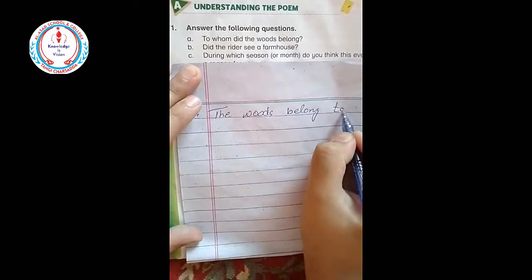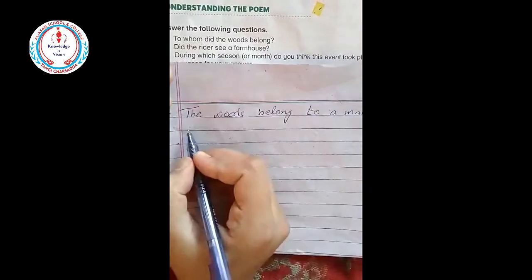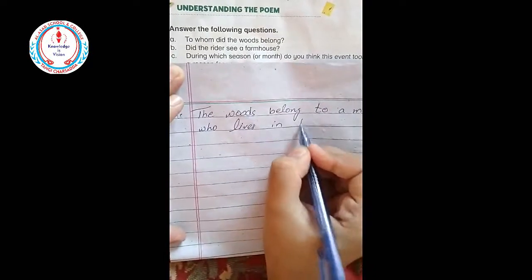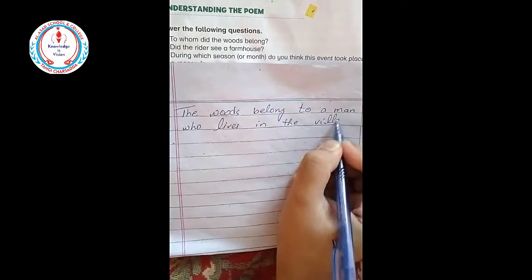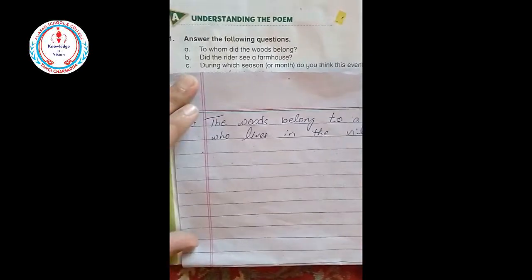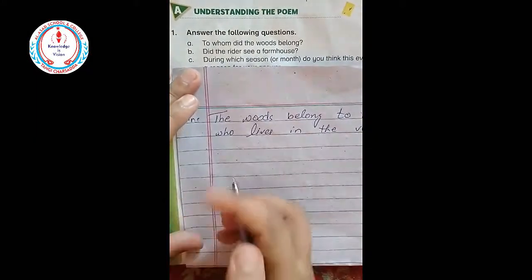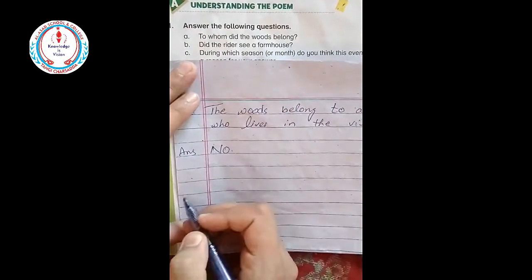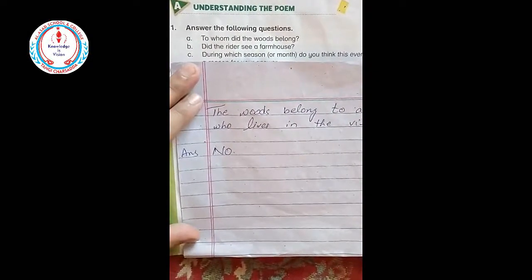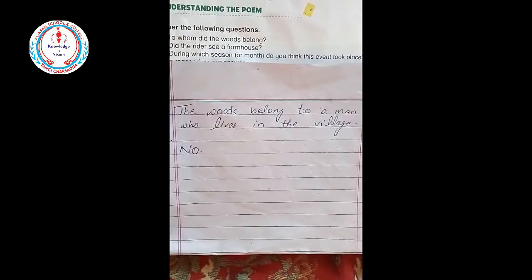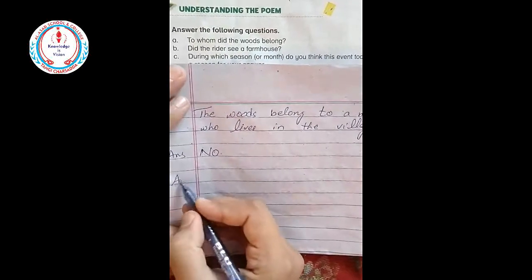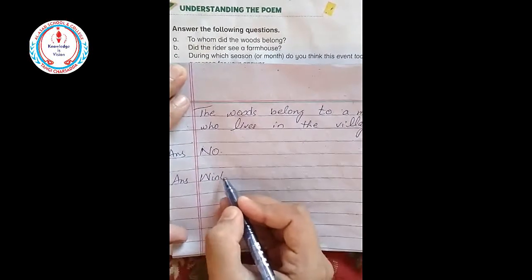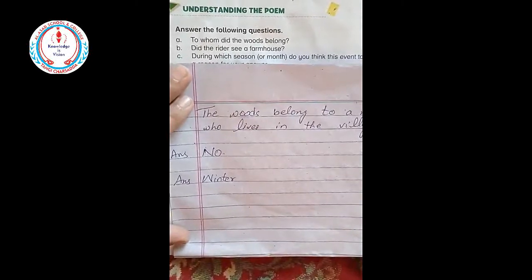Next question: did the rider see a farmhouse? No, the rider did not see a farmhouse. Question number three: during which season or month do you think this event took place? In winter, this event took place in winter.